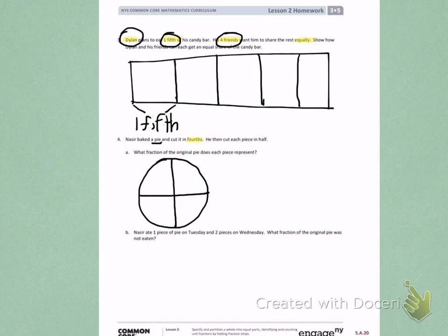After Nasir cut his pie into fourths, he then cut each piece in half. So going back to the pie, I'm going to cut each piece in half. If I cut half this way, I would not have equal parts. I want to think of the pie just like a pizza and cut each part in half.